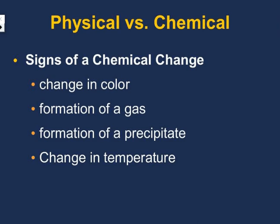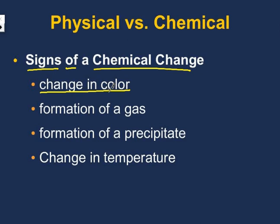Let's look for signs of a chemical change — how do we know it's a chemical change? The first thing is an unexpected change in color. We know that red and blue make purple, so that's not what we're talking about. The example is if you added two clear substances and when they combine they turn bright pink, or white plus white equals orange — something unexpected. If you combine substances and end up with an unexpected color change, that would be a chemical change.